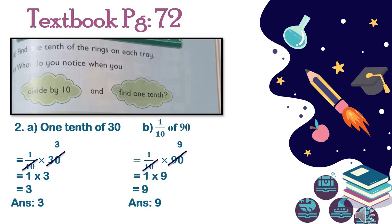In question number B, one tenth of 90. One tenth means one by ten, multiplied by 90. Ten is our bottom number and 90 is our upper number, so we have to divide 90 by 10. The answer is 9, then we multiply one with nine, which equals nine.